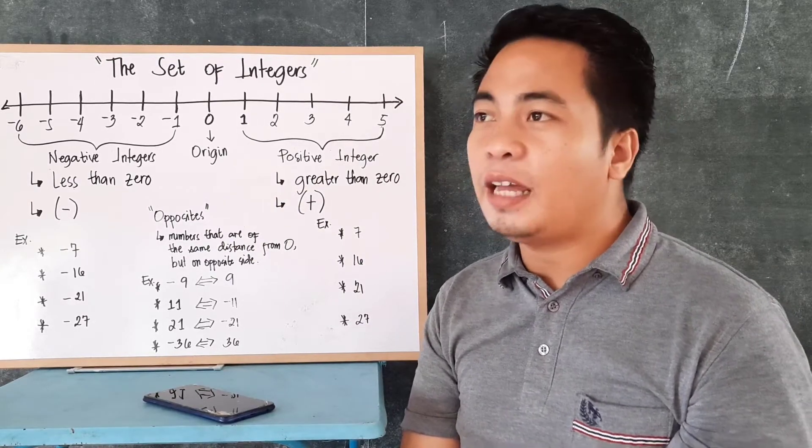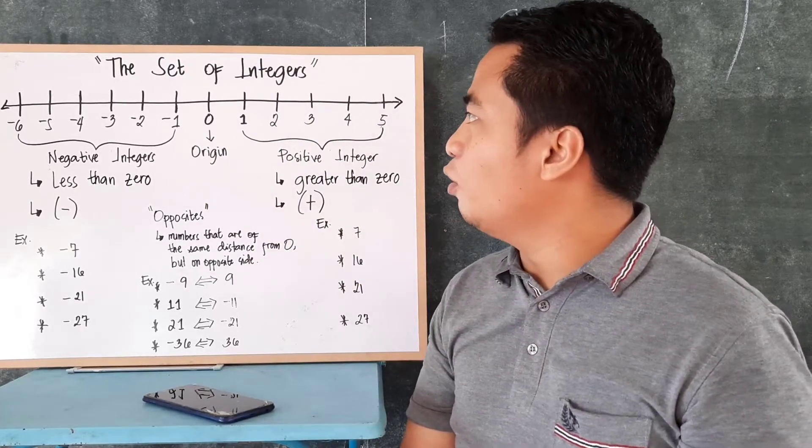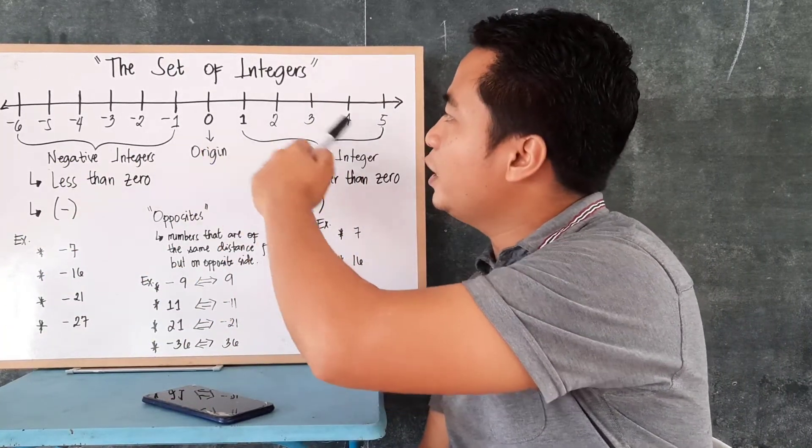Oftentimes, we can see this one in basic algebra. Now, this line in here, it represents all integers.